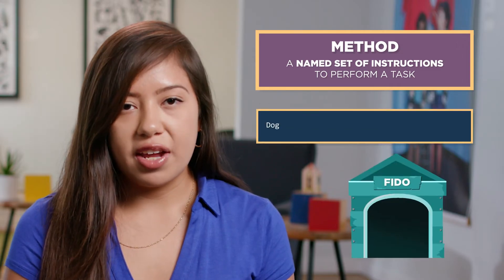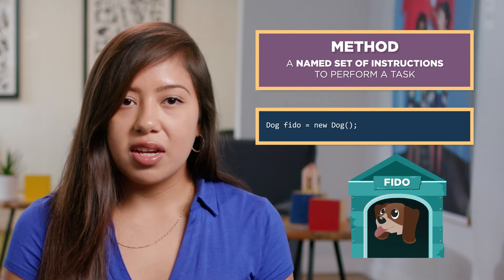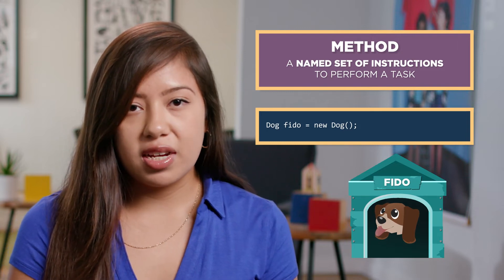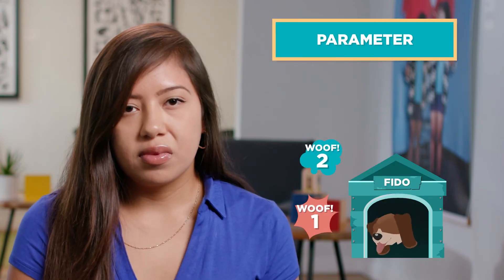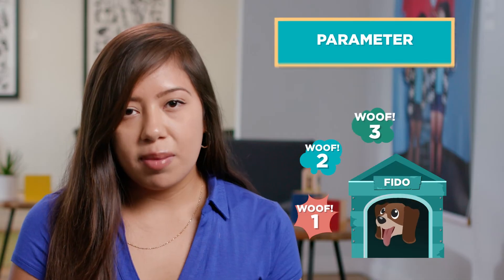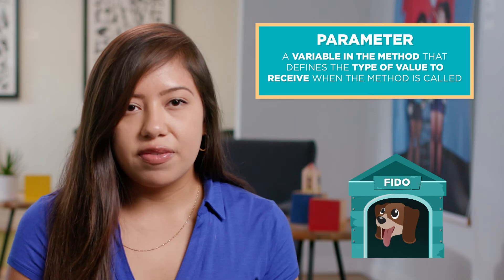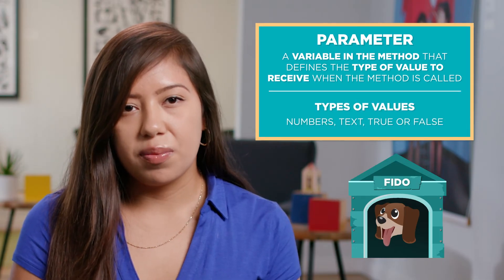Let's say I have a dog object called Fido. I've written a method in the dog class to make a dog object bark a given number of times. The number of barks is called a parameter. A parameter is a variable in the method that defines the type of value to receive when the method is called.